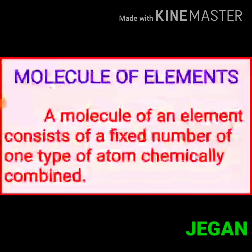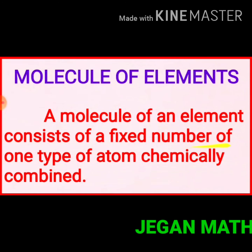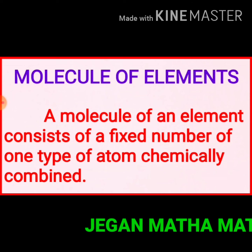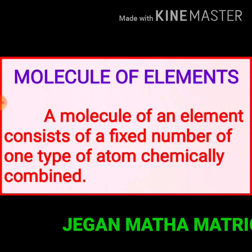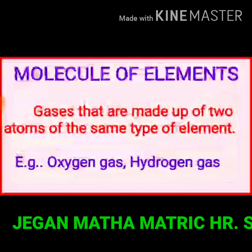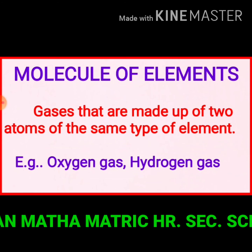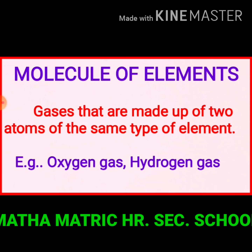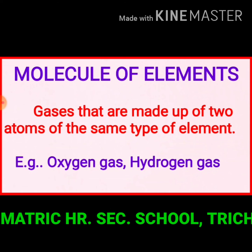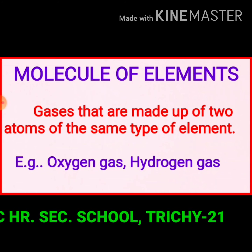Next, we learn about molecular elements. A molecule of an element consists of a fixed number of one type of atom chemically combined. Oxygen gas, hydrogen gas, and nitrogen gas are made up of two atoms of the same type of element. So oxygen and hydrogen are made up of two atoms of the same type of element and are examples of molecules of elements.